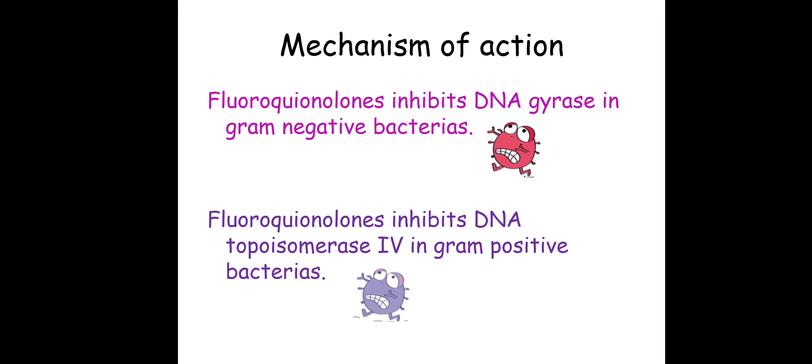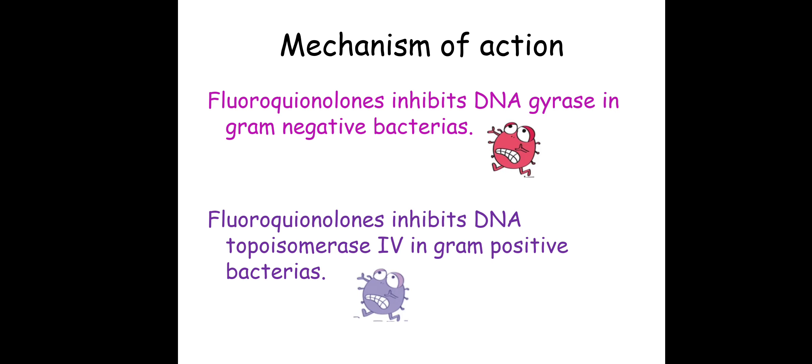The main difference between these two enzymes is that gyrases remove positive supercoiling ahead of the replication fork to restore the chromosome's negative superhelicity, whereas topoisomerase 4 decatenates or untangles daughter chromosomes after DNA replication.